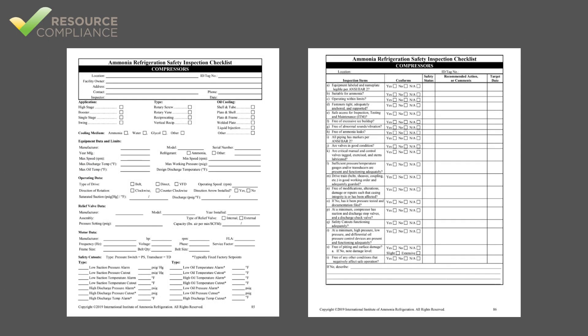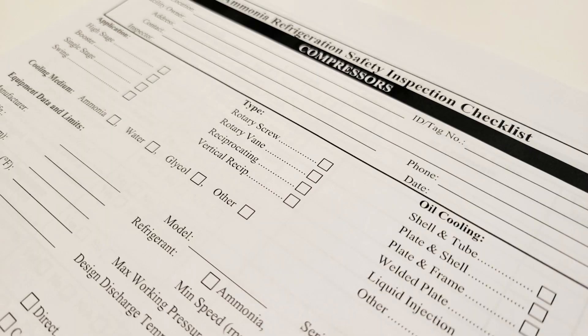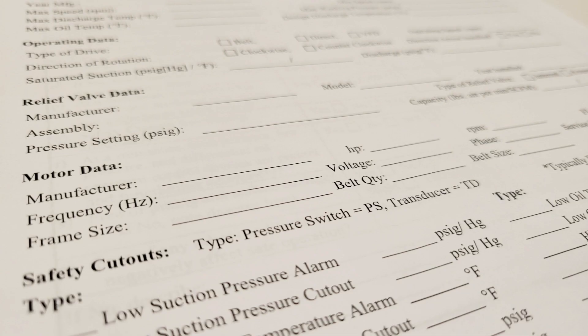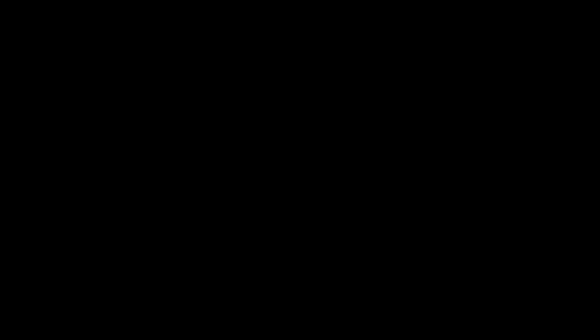The checklists are typically two pages. The first page contains contact and equipment information, and the second page has the inspection checklist. While all the information on the second page will change year to year with the equipment inspection, much of the information on the first page should stay the same. For this reason, you may only have to fill out the first page for each piece of equipment once. For subsequent years, you should only have to fill out the second page.